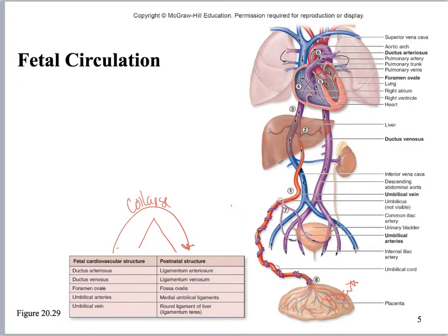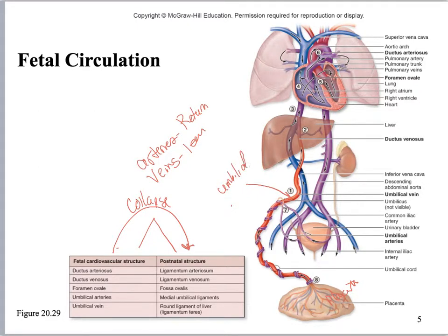Now remember: arteries return, veins leave. So I have my umbilical vein right here in red — this is my umbilical vein. This gets confusing, so please be clear on what you're looking at.